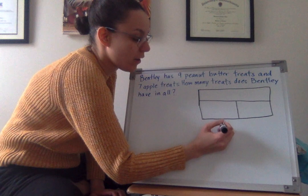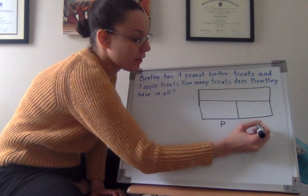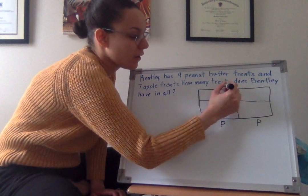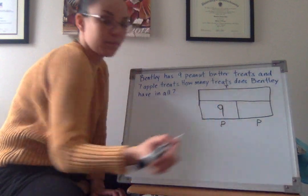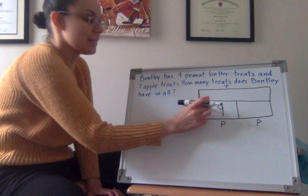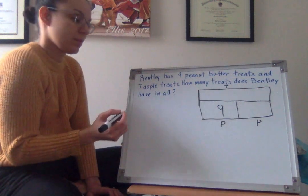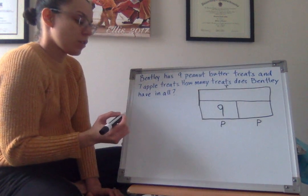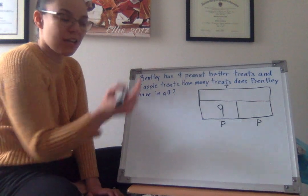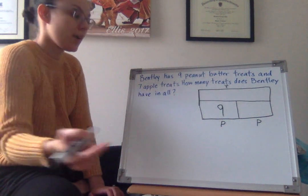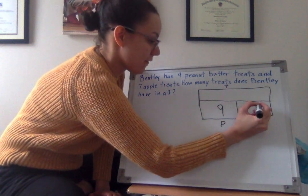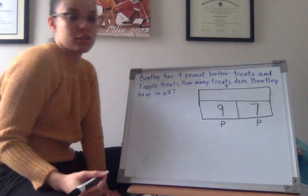So if nine is my part, let me go ahead and label this part, part, total, I'm going to put nine right here. Because he has nine peanut butter treats. So then my apple treats, is that a part or is that a total? Yeah, that's the other part. He has seven apple treats.